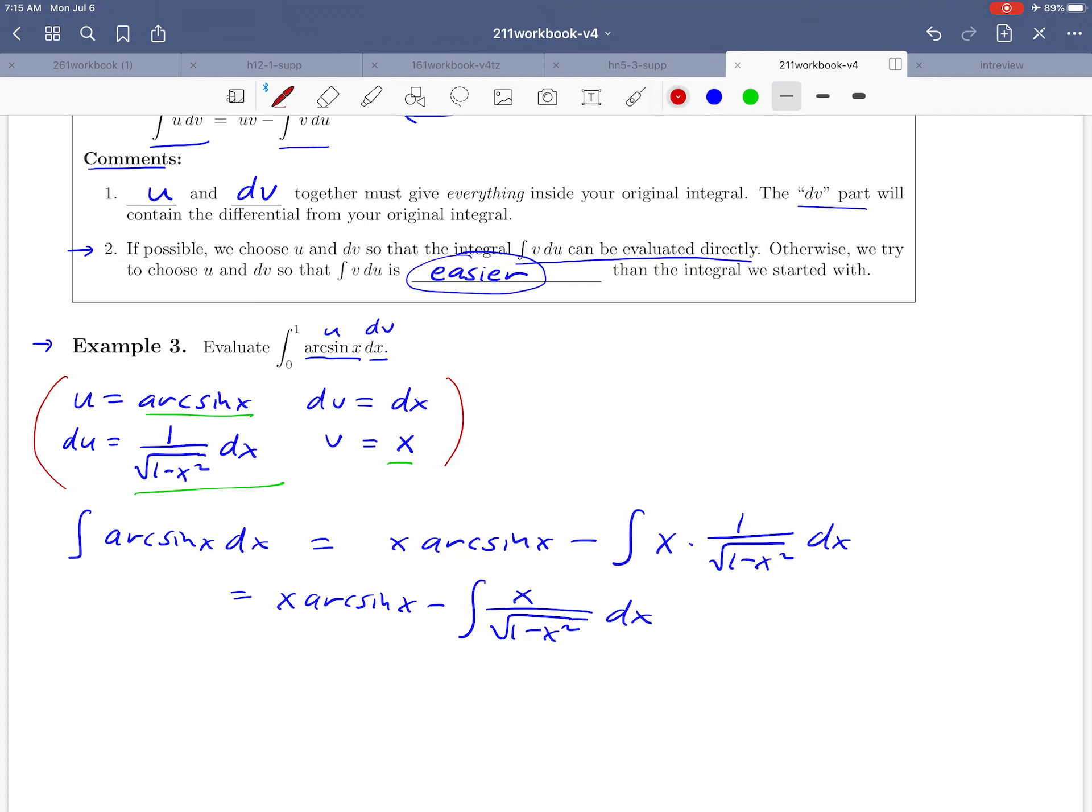Because we've already used the variables u and v, I'm going to choose to use the variable w to do this substitution. So we're talking about this integral. We're going to let w be the part inside of the square root, 1 minus x squared. And if we take its derivative, we're going to get, let's see, derivative of 1 minus x squared is negative 2x dx. And getting the dx by itself, we can divide both sides by negative 2x. And we get that.